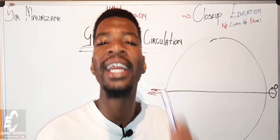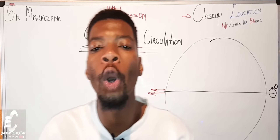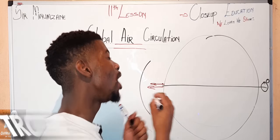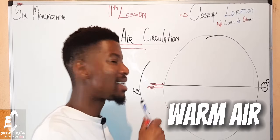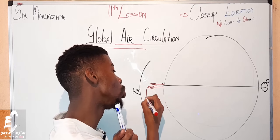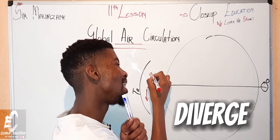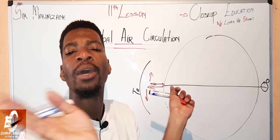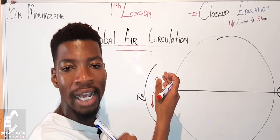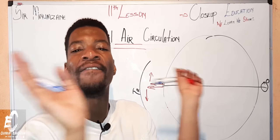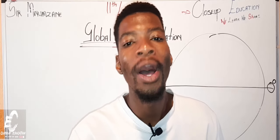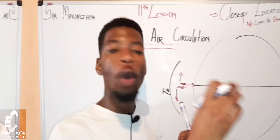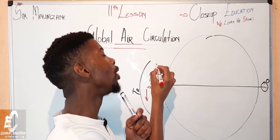We know that an area with low pressure causes air to ascend. At the equator, air is ascending and when it rises, it reaches a layer called the tropopause. As that warm air reaches the tropopause it diverges, and as it diverges it cools off — because the higher you go, the colder it gets.